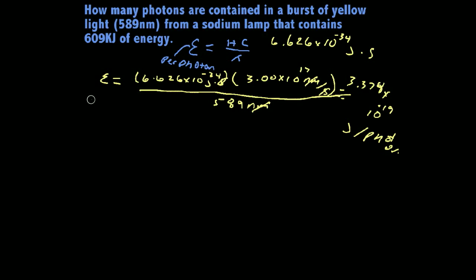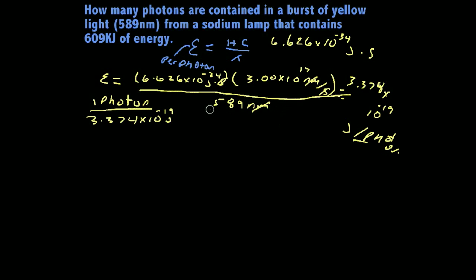That ratio — 3.374 times 10 to the negative 19 joules per photon — can be written as: one photon for every 3.374 times 10 to the negative 19 joules. Both expressions mean the same thing. Now we have our joules per photon. But the question wants to know how many photons are in 609 kilojoules, so now it's just a simple conversion process.